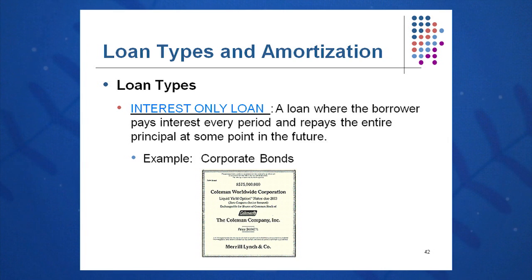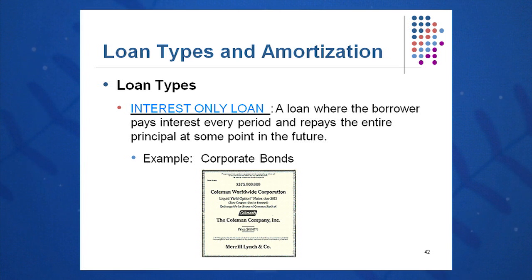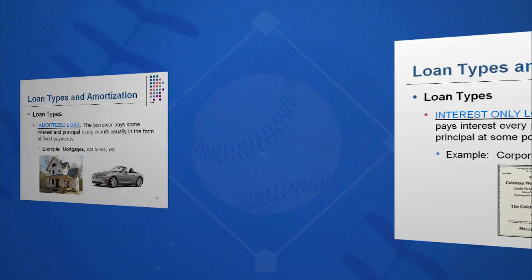They do have to pay you some interest called a coupon each and every year — sometimes semi-annually — to keep you interested in the corporate bond. They pay you an interest amount each year and they repay your principal amount back at the end of 30 years. We'll go over that in session number seven.